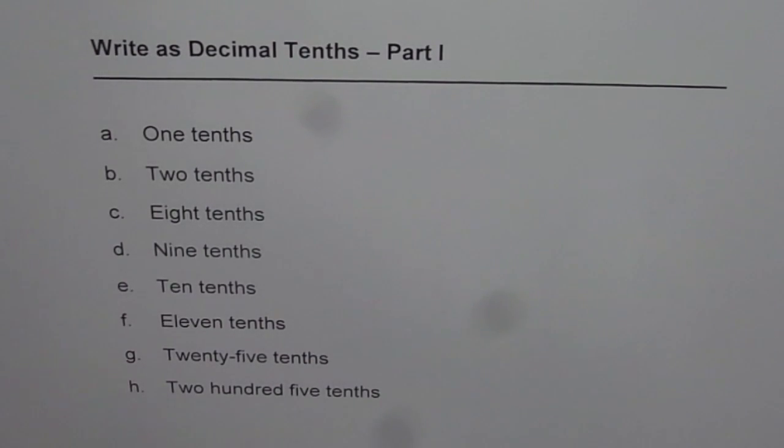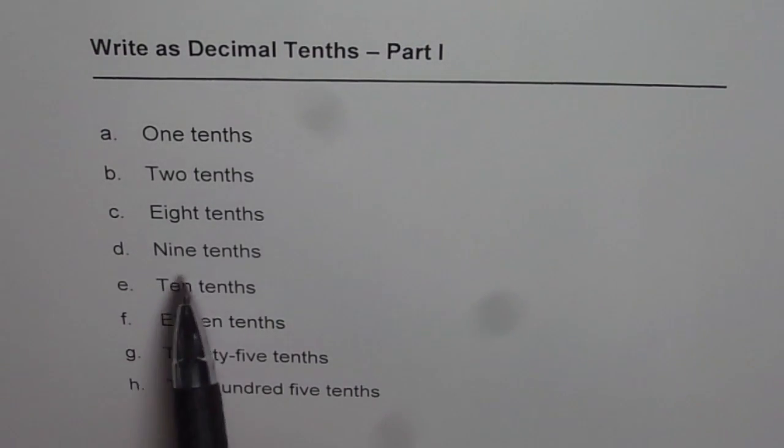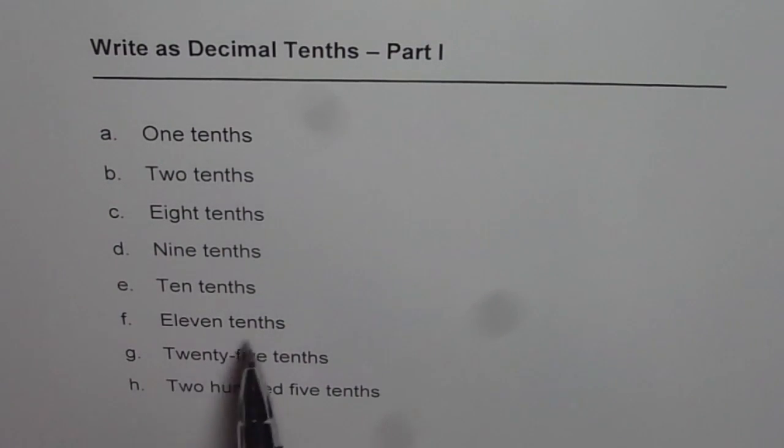I'm Anil Kumar and in this video we will understand how to write as decimal tenths. You can pause the video, copy the question, write down the decimal equivalence and then check with my answers. So we have one-tenths, two-tenths, eight-tenths, nine-tenths, ten-tenths, eleven-tenths, twenty-five-tenths and two-hundred-five-tenths. I've given this sequence so that you can understand how to write numbers in tenths when given in words.